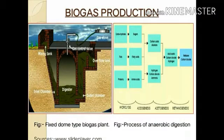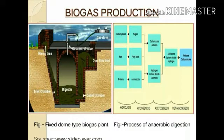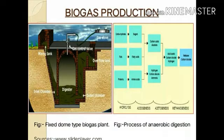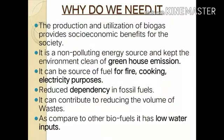The methane produced is supplied through a gas controller to the gas stove or other domestic appliances. The remaining product in the digester tank from anaerobic degradation is used as fertilizer or manure for crops, which is very beneficial for farmers. This is the complete mechanism of biogas production — it is low-cost and sustainable.